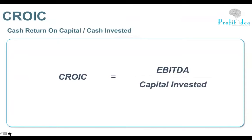Coming to the parameters now, and understanding how you can make best use of some simple basic parameters which can help you understand whether a stock is good and whether it can actually help you make money in future. So we look at a number called Cash Return on Invested Capital — CROIC — which is EBITDA upon capital invested.